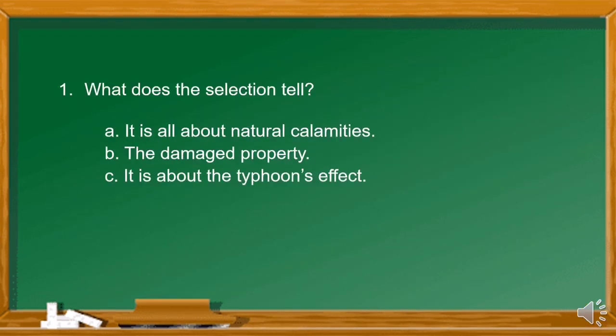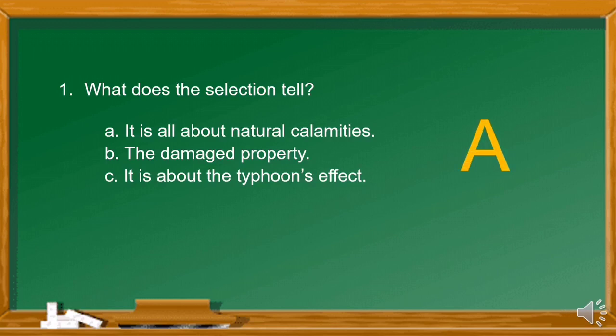Number 1. What does the selection tell? A. It is all about natural calamities. B. The damaged property. Or C. It is about the typhoon's effect. What's your answer? The answer is letter A.